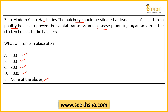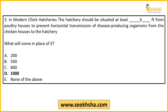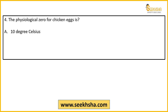It is a factual and technical question. If you have studied it, you can answer it — guessing won't help. The answer is Option D — 1000 feet. That is the minimum distance the hatchery should be from the poultry house if you want to protect the chicks from diseases.